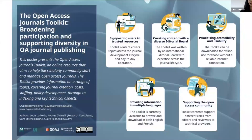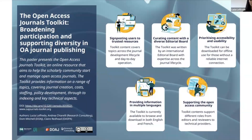Thank you for inviting me to present today. I'm going to be talking about the open access journals toolkit and explain how it aims to broaden participation across open access publishing. The toolkit is essentially a website — you can find it at oajournals-toolkit.org — and this website brings together information on a range of different topics for members of the OA community who would like to start or manage open access journals. The various pages on the toolkit website provide information on topics all across the journal development lifecycle, from creating an open access journal through finding funding, staffing considerations, policies, and some of the more technical aspects.